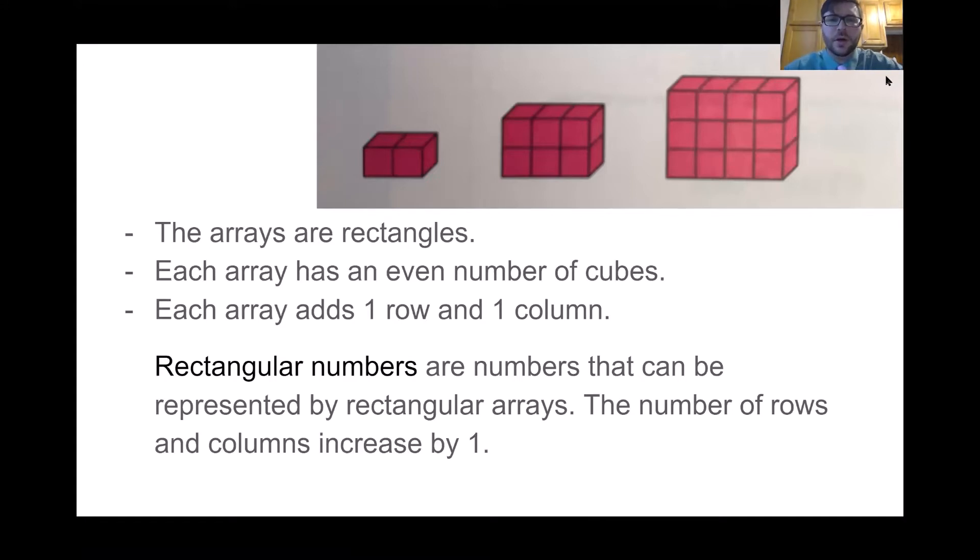And then we're going to go over some of them that you might have noticed. First, all of these are rectangles. Might have given it away when I had said that we're going to go over rectangular numbers. But yes, they're all rectangles. Each array has an even number of cubes. So if we count, let's see if that's true.